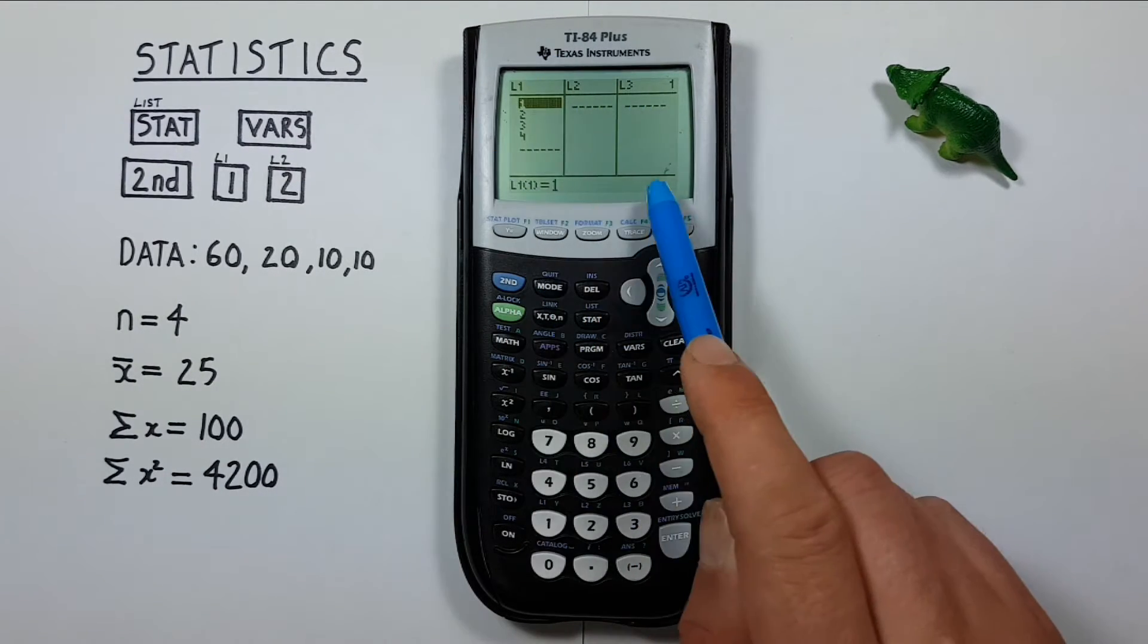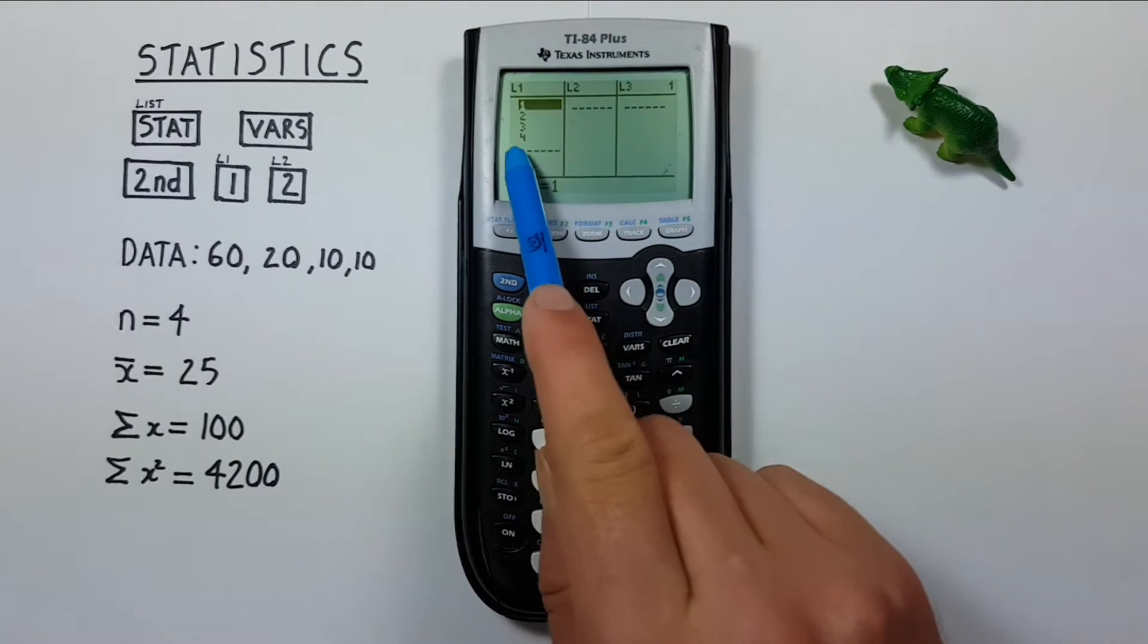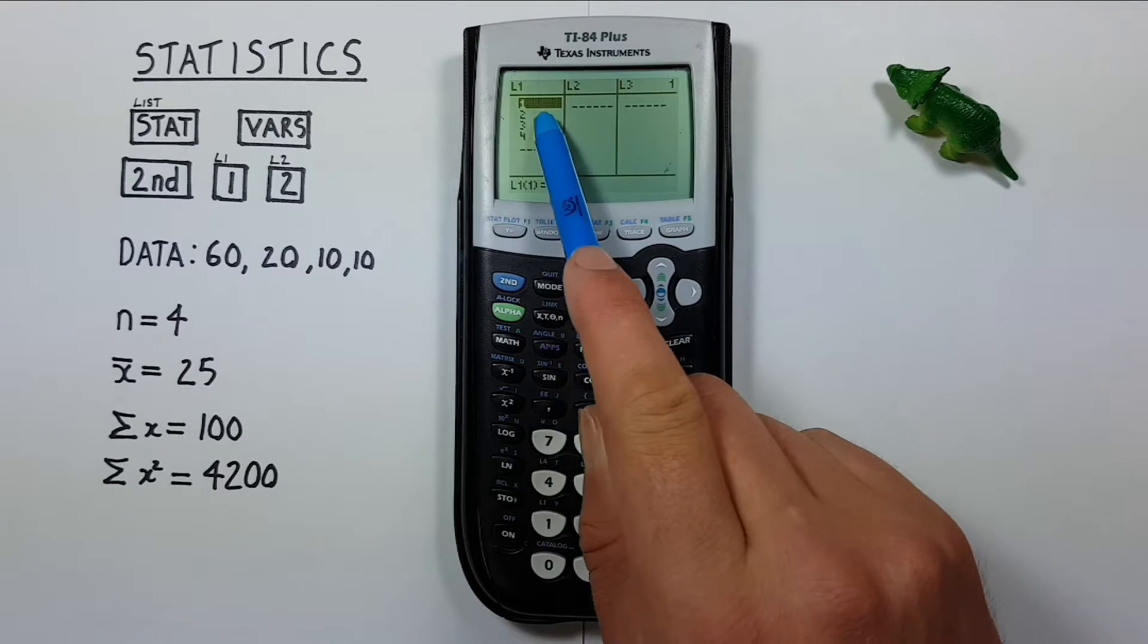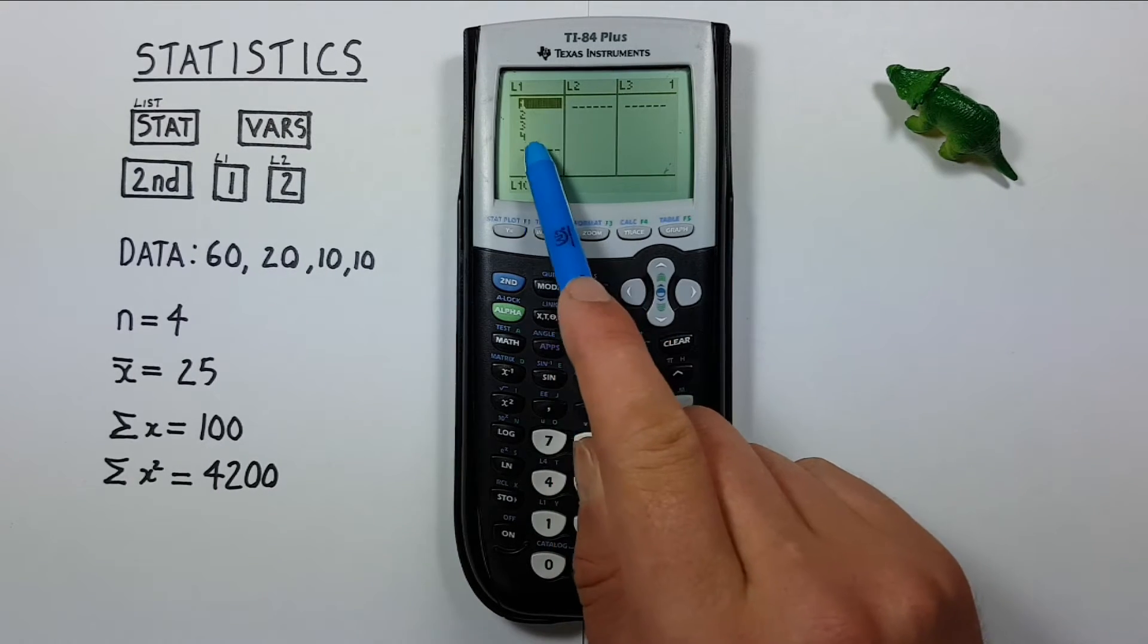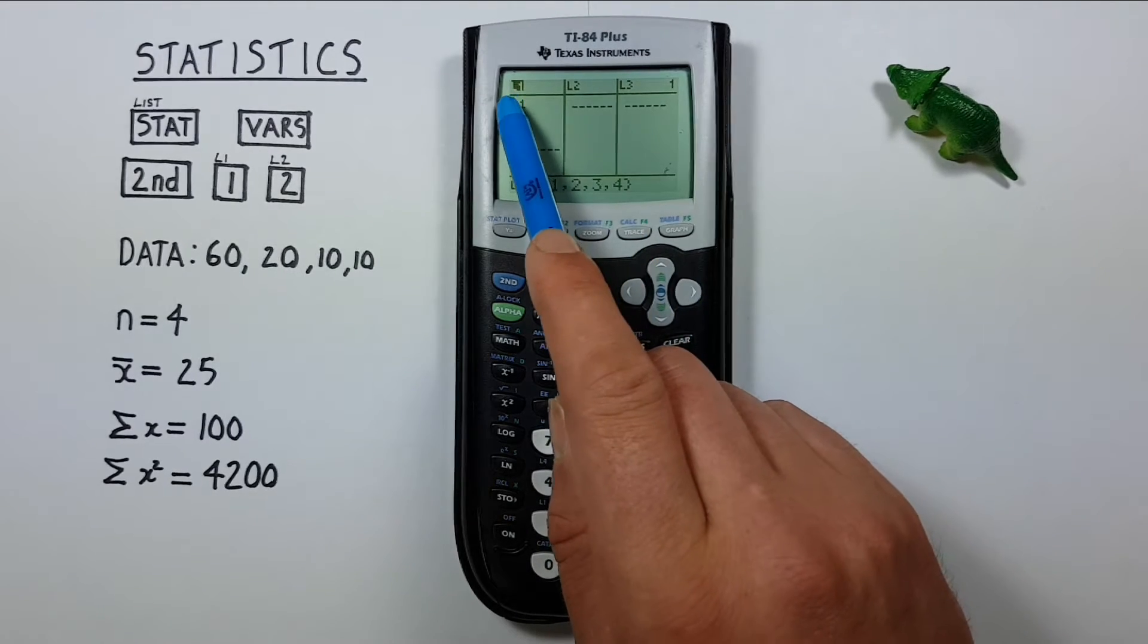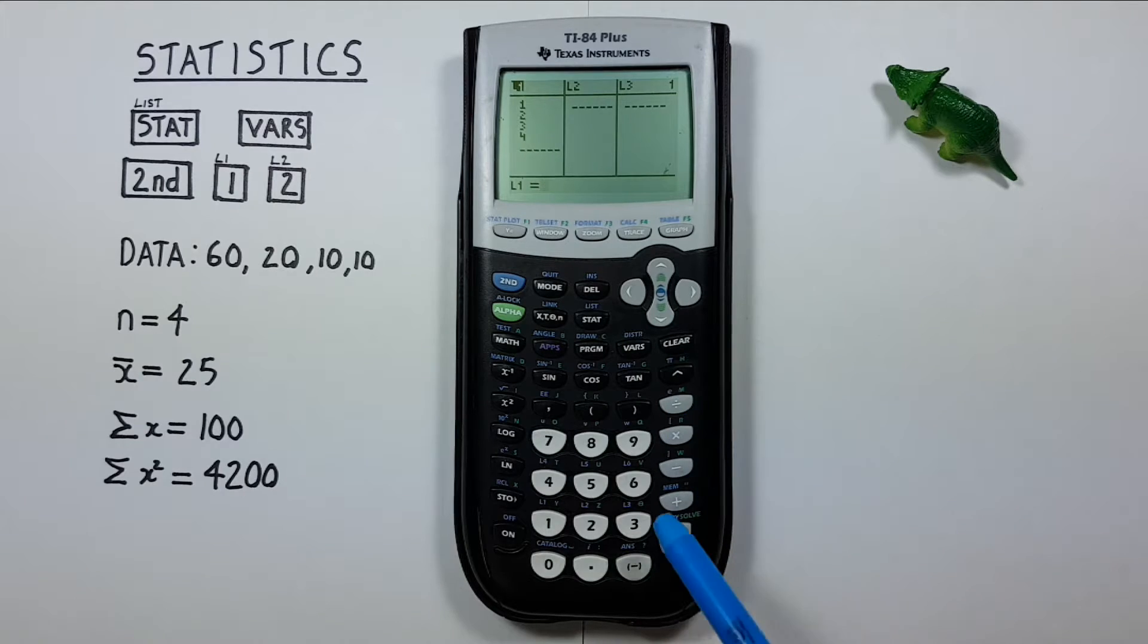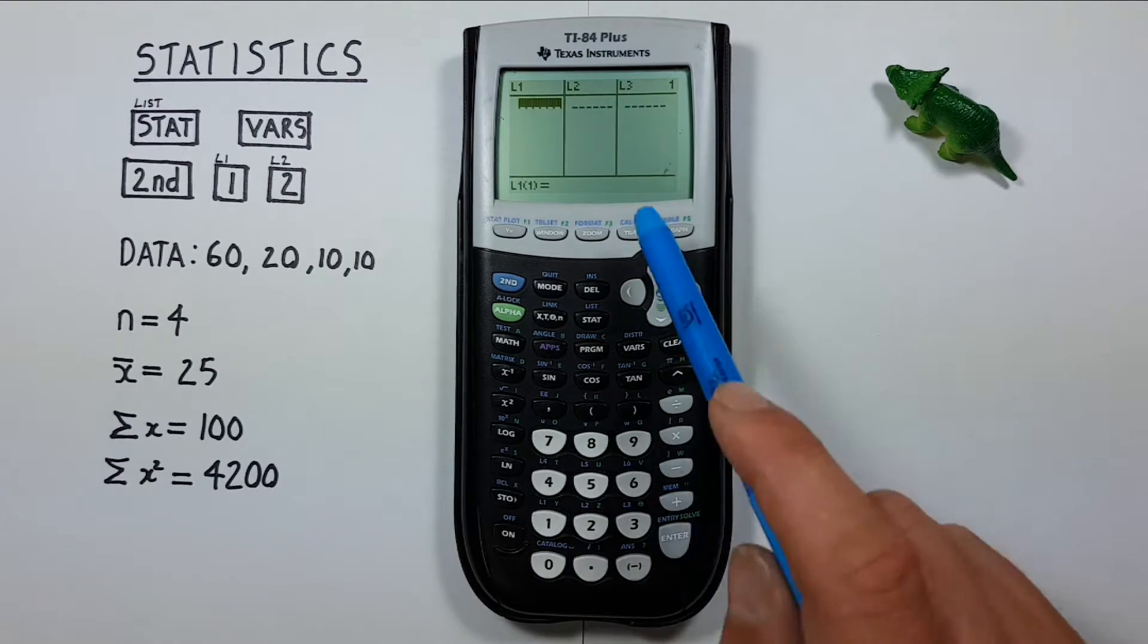And now we see our lists. This is where we enter our data set. We'll want to use L1 and you can see there's already data in here. So if I want to clear that and put my new data in, I start by scrolling up so that the L1 is highlighted, then press the CLEAR key, press ENTER and our list will be cleared.